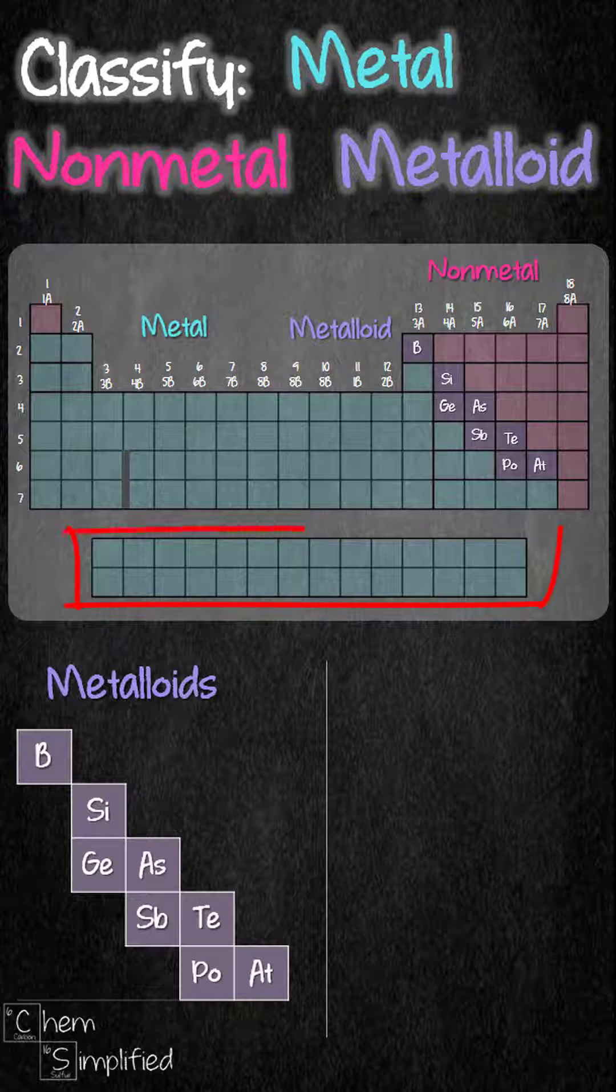Notice this strip of elements here. They are the inner transition metals. They come from here. That means they are also metals.